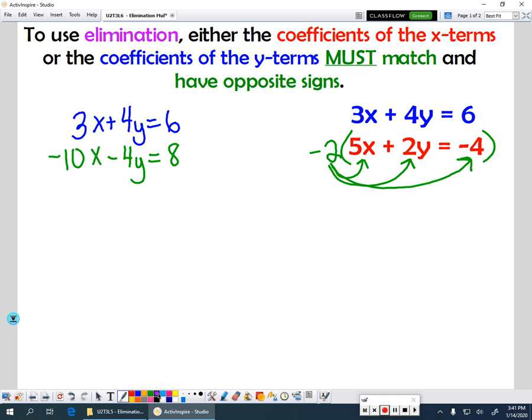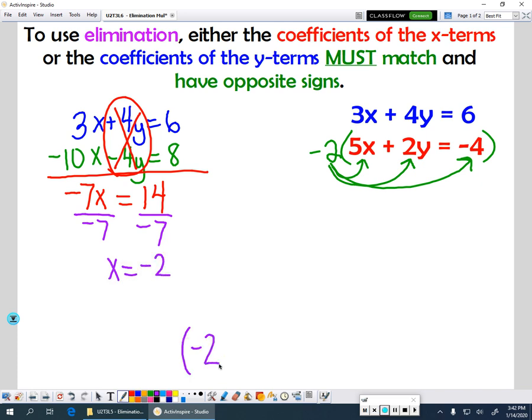So now, what we're going to do is we're going to combine these two equations together. So 3x minus 10x will give me negative 7x. My 4s, positive 4 and negative 4, are going to cancel out. And 6 plus 8 would be 14. To finish this off, divide both sides by negative 7. And I get x = -2. So the x value of my ordered pair is going to be negative 2.